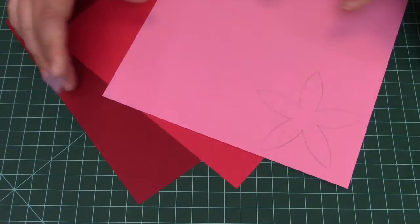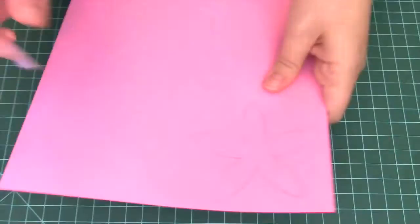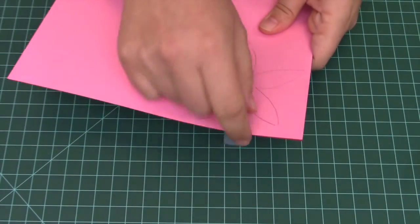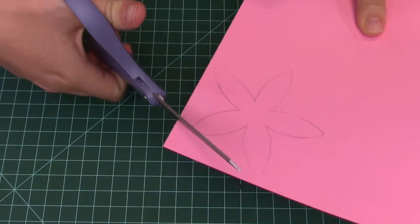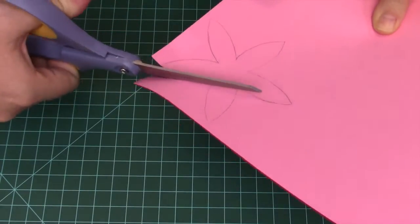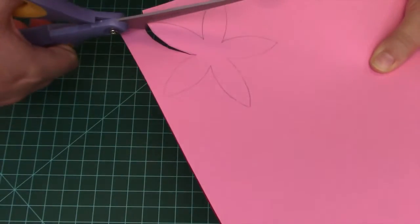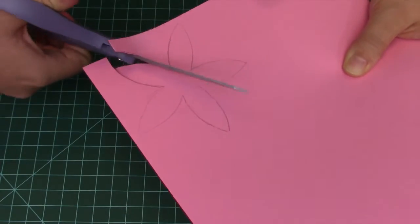Next, we will take all three sheets of paper, put them together, and tape them at the top. Next, we can cut out all three flowers at the same time, because they are taped together. Make sure not to cut off the top where it's taped.